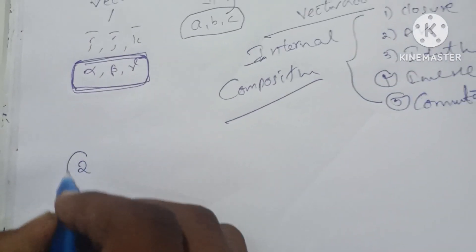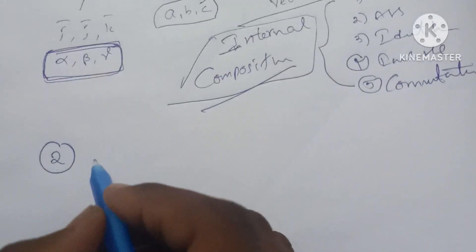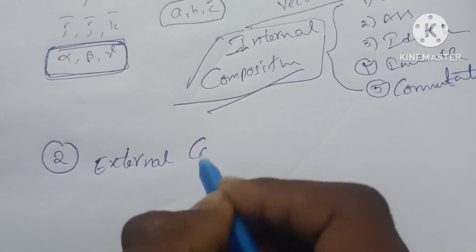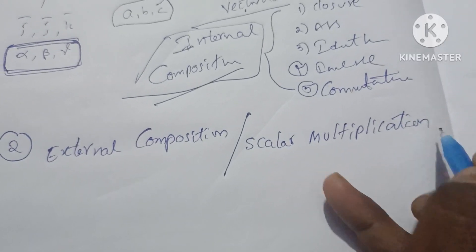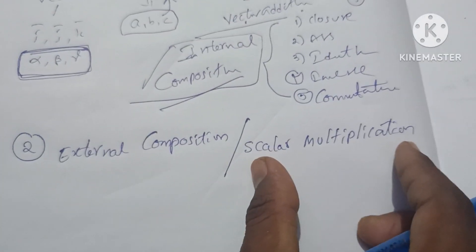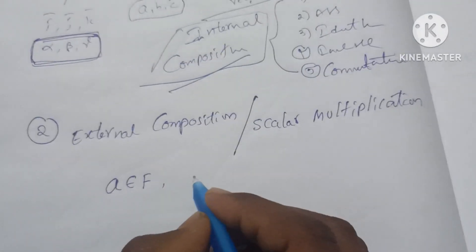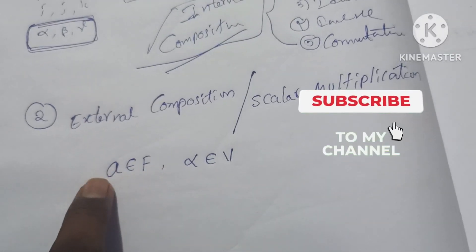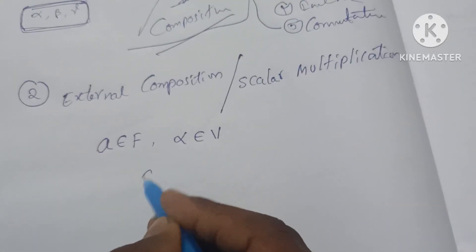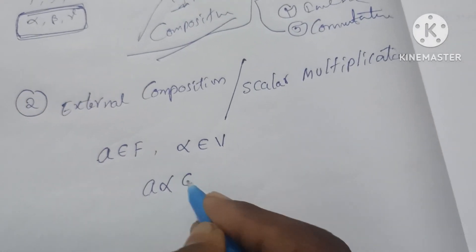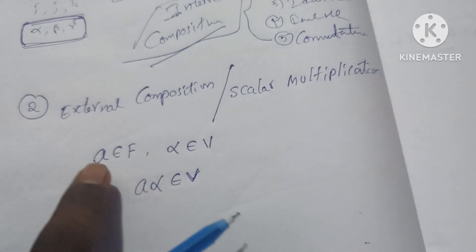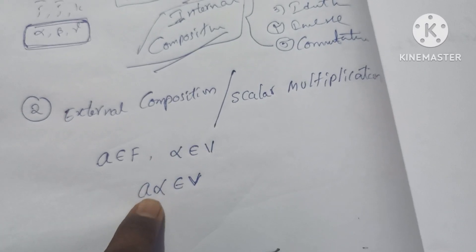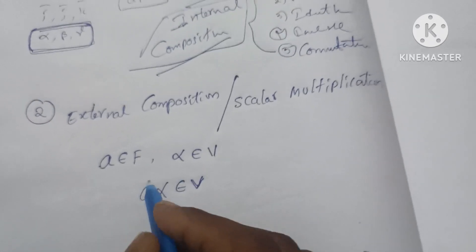Let's do the second condition. Here we have internal composition, but now we have to do external composition — here we have scalar multiplication. The external composition: if there is an element in a field and an element in a vector, and you multiply them, i.e., a into alpha, the product is a vector. This is the second condition — a field element times a vector element gives a vector.